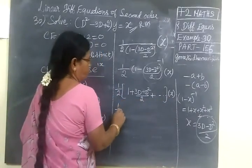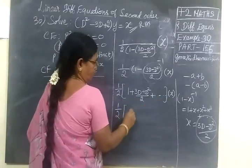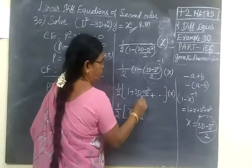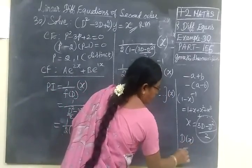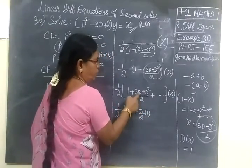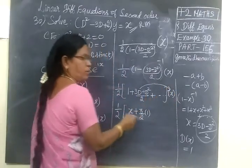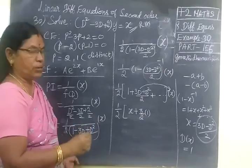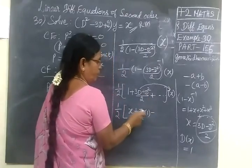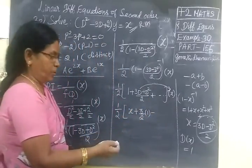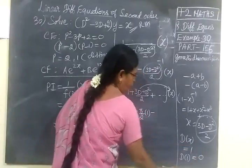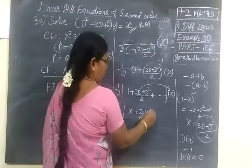Equal to 1 by 2. Then you take x inside. So x plus 3 by 2 D of x. D of x is nothing but differentiation, that is nothing but 1. So you write 3 by 2, D of this x. D into x, differentiation of x, this is 1. Then that would be 0 because this 1 is differentiated again.